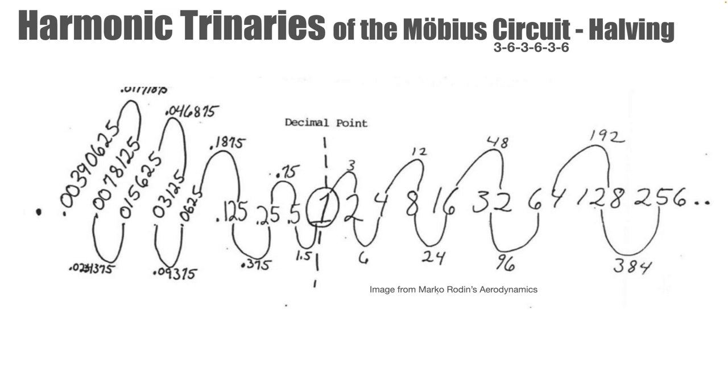We can also perform this same operation with the halving sequence. Taking the sequence 1, 0.5, 0.25, 0.125, 0.0625, etc. 1 plus 0.5 equals 1.5 equals 6, the digital root. 0.5 plus 0.25 equals 0.75 equals 3. 0.25 plus 0.125 equals 0.375 equals 6, etc. And so you can look at how that fits into the cipher as well.